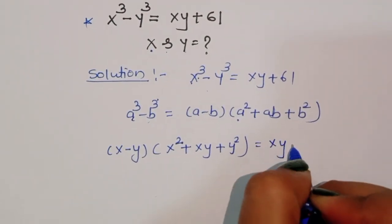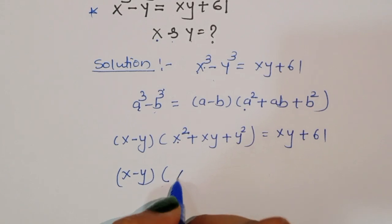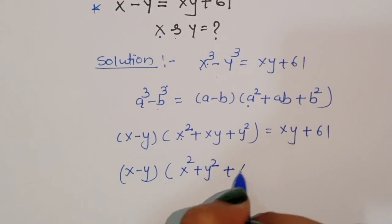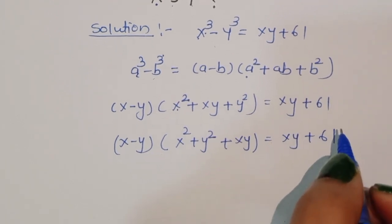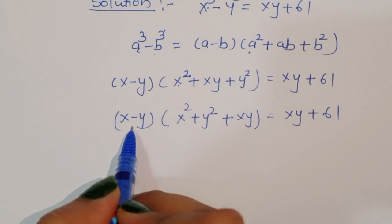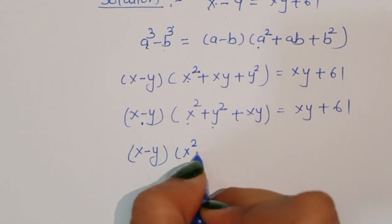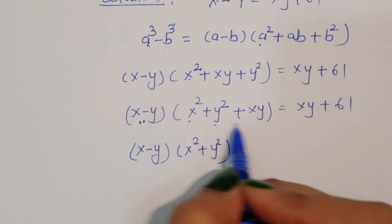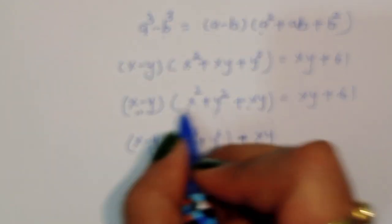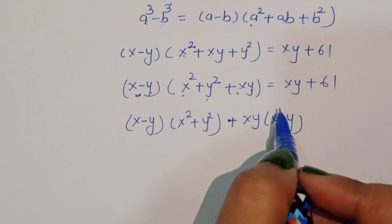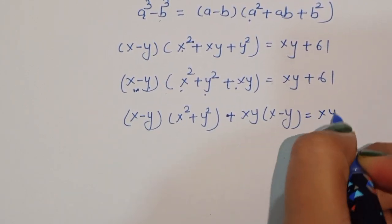So (x - y)(x² + y² + xy) = xy + 61. Now we can expand this as: (x - y)(x² + y²) + xy(x - y) = xy + 61.